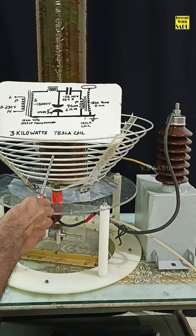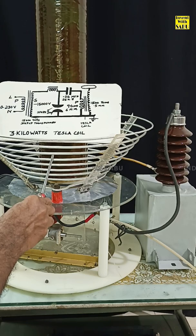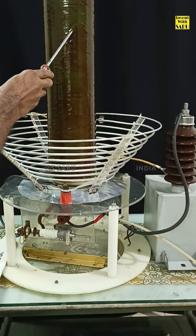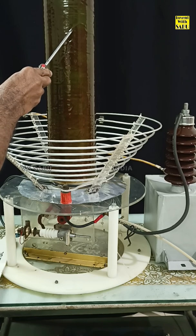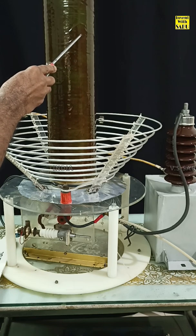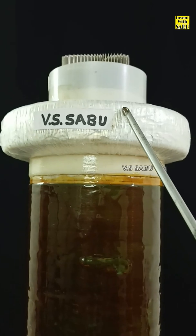This is the Tesla transformer primary winding. This is the top toroid.